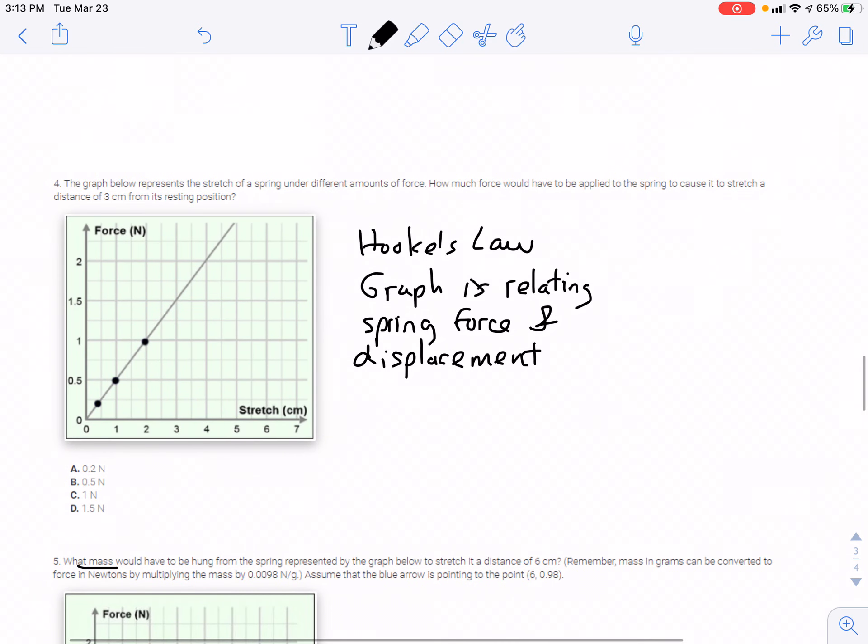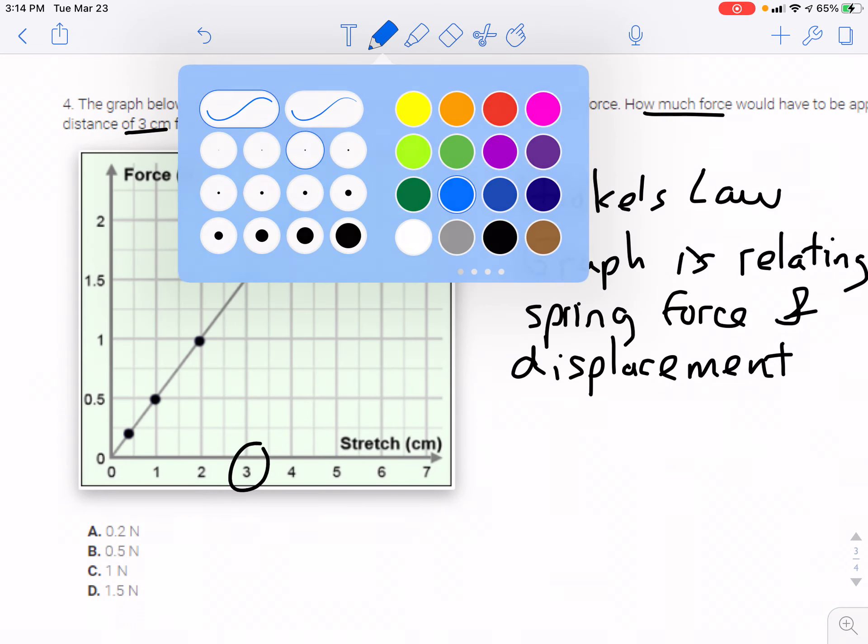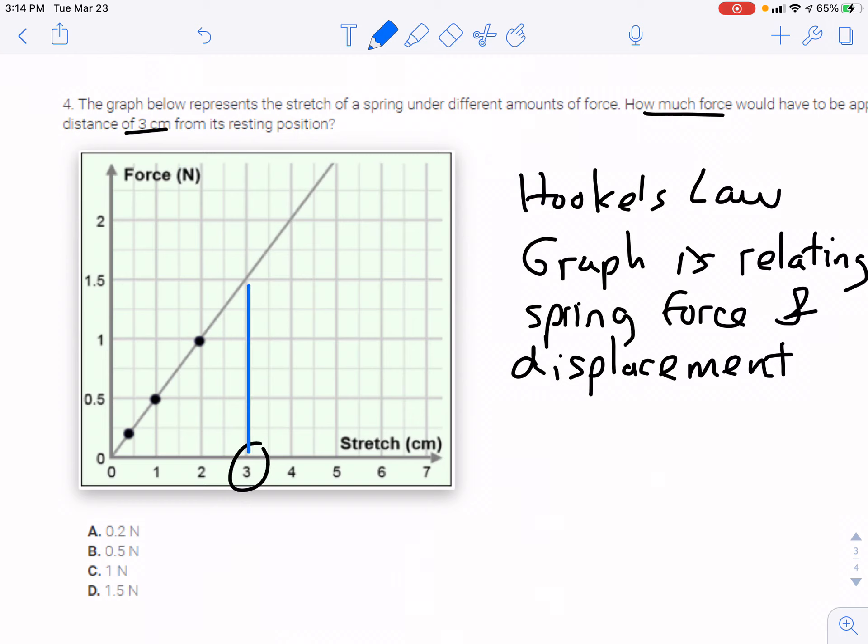Within this question we're also asked to deal with the slope of the line and specifically extrapolating beyond the data. The largest data is 1 newton at approximately 2 centimeters of stretch. We're asked to figure out how much force there would be with 3 centimeters of stretch. So we go to 3 centimeters, up to the line where the slope represents K, the spring constant or the stiffness of the spring. Then we relate it to the amount of force needed to stretch it this far, which is approximately 1.5 Newtons.